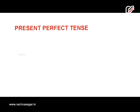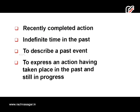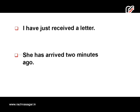Present perfect tense is used for recently completed action, indefinite time in the past, to describe a past event, and to express an action having taken place in the past and still in progress. For recently completed action: 'I have just received a letter' and 'She has arrived two minutes ago.' The words 'just' and 'two minutes' tell us the action has just been completed.